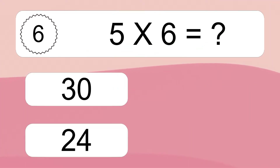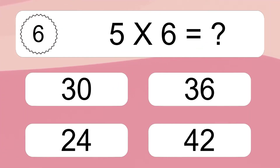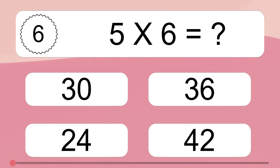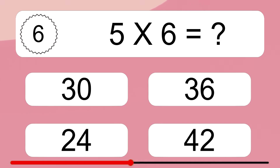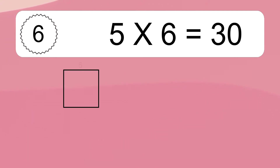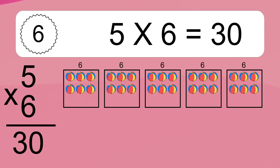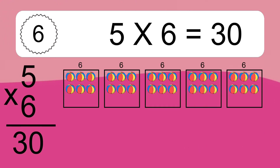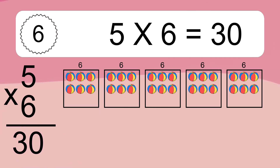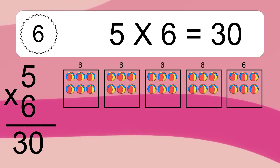Five times six equals what? Five times six equals 30. We have five boxes, and each box has six colorful balls inside. If you count all the balls in all the boxes together, you will have five times six balls. This equals 30 balls.